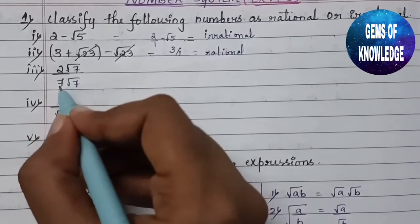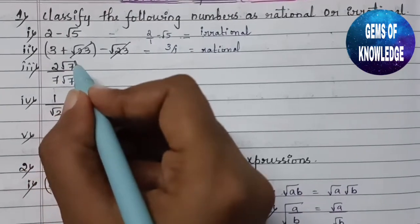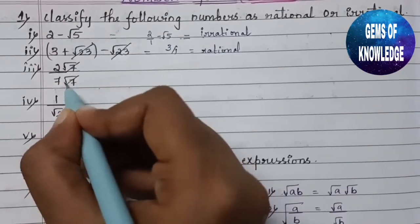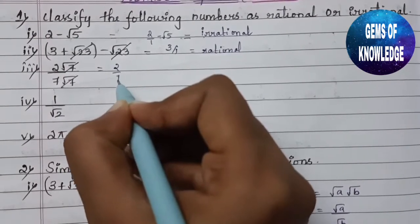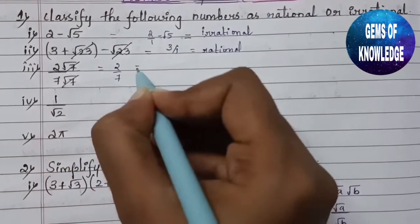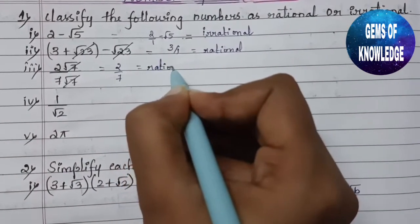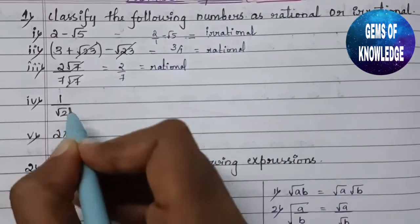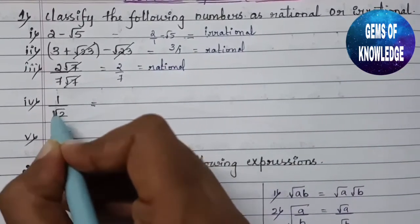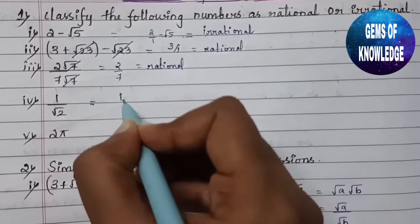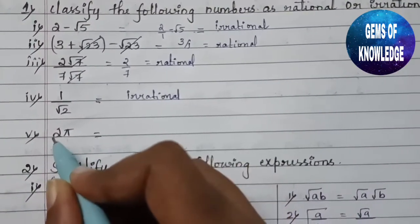The third one is 2 root 7 divided by 7 root 7. You can cancel root 7 from numerator and denominator, and you are left with 2 by 7, which is a rational number. Next, 1 by root 7 is given, which is a purely irrational number.